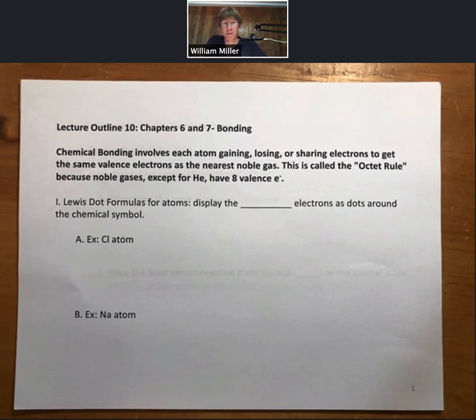The first thing we have to know about bonding is the octet rule. Chemical bonding involves each atom gaining, losing, or sharing electrons to get the same valence electrons as the nearest noble gas. This is called the octet rule because noble gases, except for helium, have eight valence electrons. Bonding occurs so that each element has eight valence electrons, except those closest to helium, which will want the same valence electrons as helium.